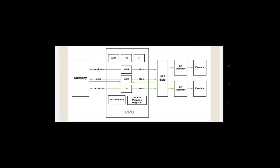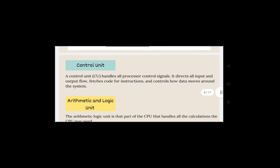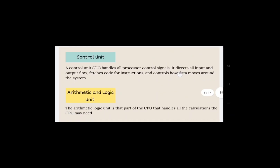The accumulator holds temporary operands and results of ALU operations. The General Purpose Register (GPR) is used for storing operands and pointers. The I/O bus is a pathway used for input and output devices to communicate with the computer processor.